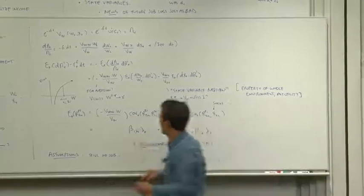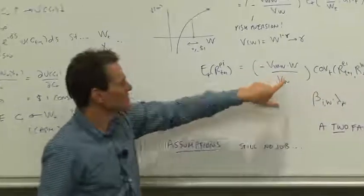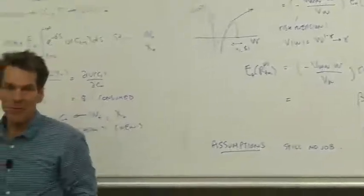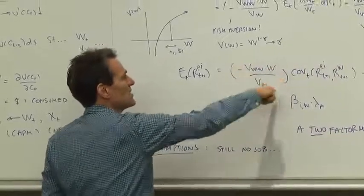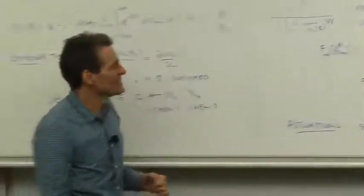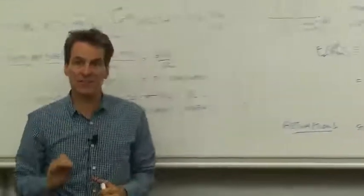Now let's look a little bit more carefully at these coefficients. This guy here, VWW times W over VW, you've seen that before. That's the same expression as derivatives of the utility function that gave us gamma. This is risk aversion. In fact, this is the correct definition of risk aversion.